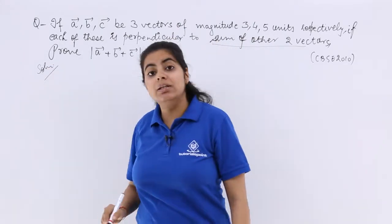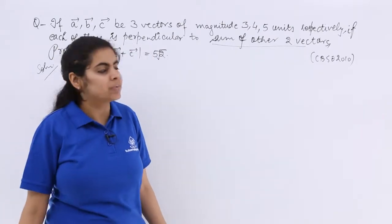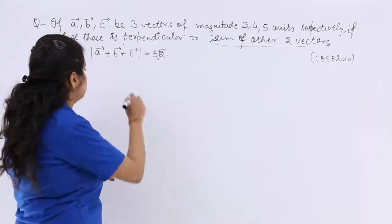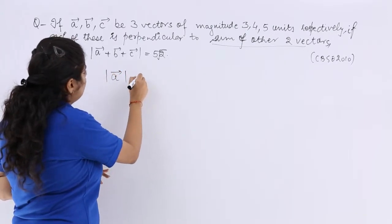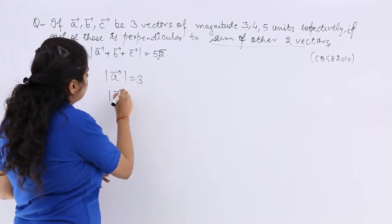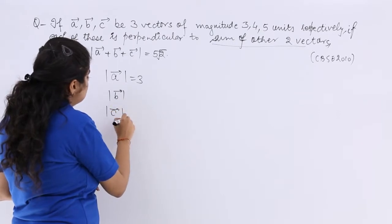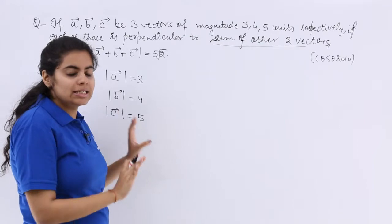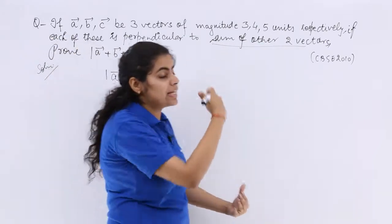It says we have A, B, C as 3 vectors of magnitude. So whatever information you are gaining, let's write it down. Mod A equals 3, mod B equals 4, mod C equals 5. Done. Till here I have written. Let's move to the next line of the question.